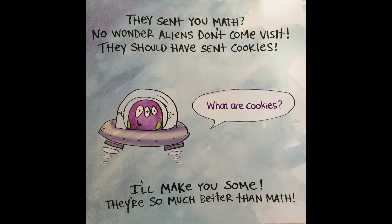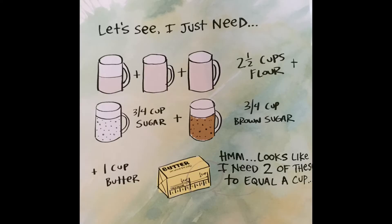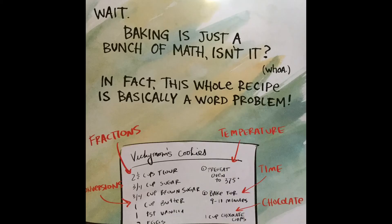What are cookies? I'll make you some. They're so much better than math. Let's see. I just need two and a half cups of flour and three quarters cup of sugar, three quarters cup brown sugar, and one cup of butter. Hmm. Looks like I need two of these to equal a cup. Wait. Baking is just a bunch of math, isn't it? Whoa.